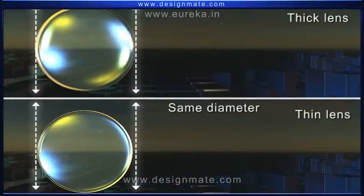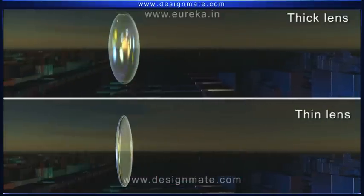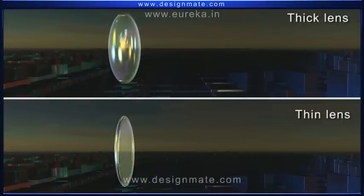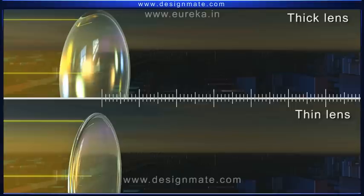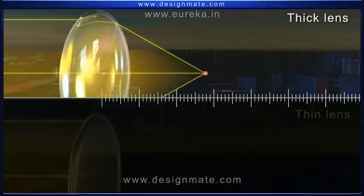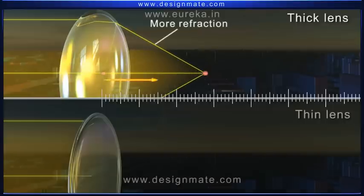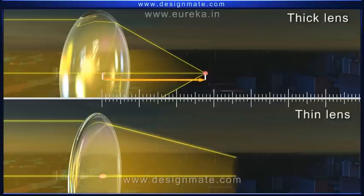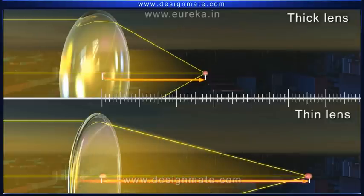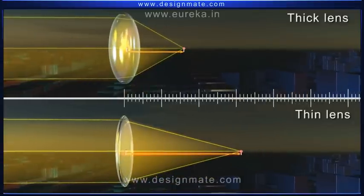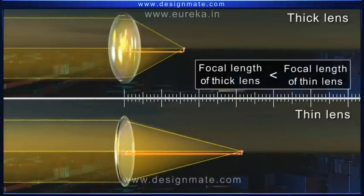Take two lenses of the same diameter but of different thickness and hence different curvature. When parallel light rays are incident on them, you can observe that the light rays passing through the thick lens undergo more refraction and get converged at a shorter distance, as compared to the thin lens, which causes less refraction. So we can observe that the thick lens has a shorter focal length than the thin lens.